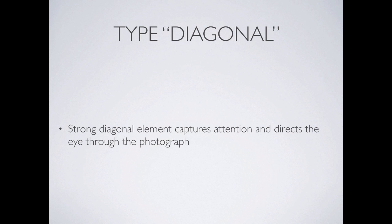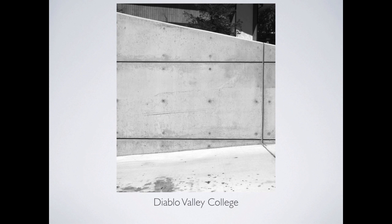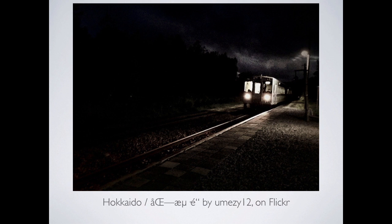Diagonal is another strong compositional technique. If you have strong diagonals in an image, it can activate the image as well. This was up in Sea Ranch — you've got strong horizontal and vertical lines and then the diagonals, which start to activate the composition. Another strong diagonal: the train on the tracks against an almost pitch-black background, making that strong diagonal really stand out as part of the image.